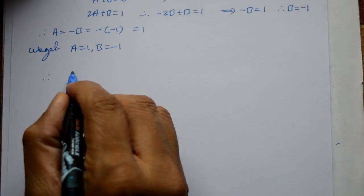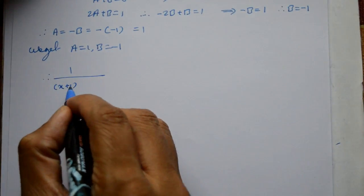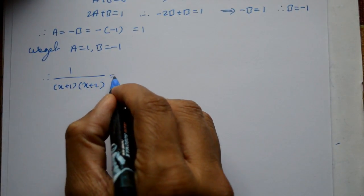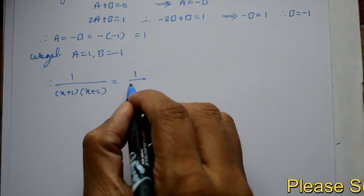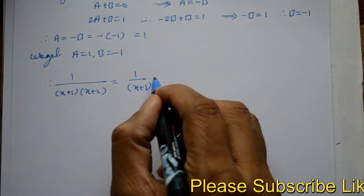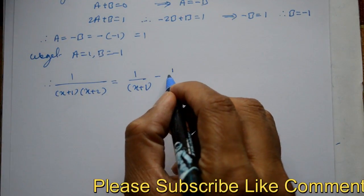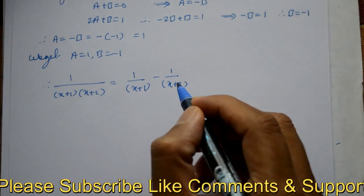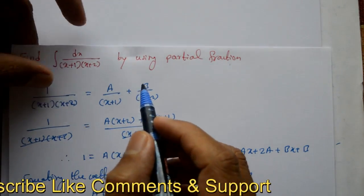Therefore, 1 by (x+1) into (x+2) is equal to, A is 1, so 1 by (x+1), B kya hai minus 1, minus 1 by (x+2) is thara ah gaya. Either substitute kya hai.